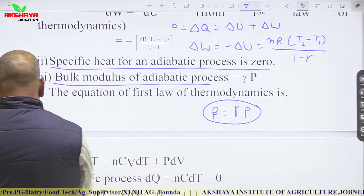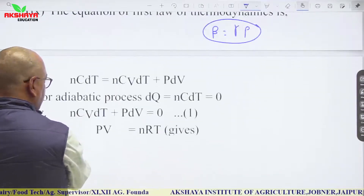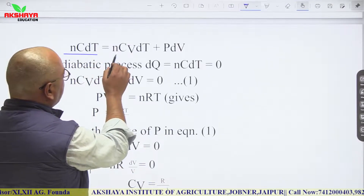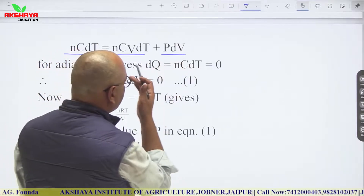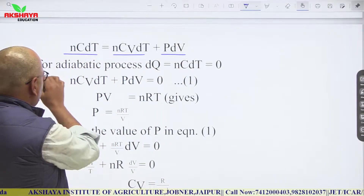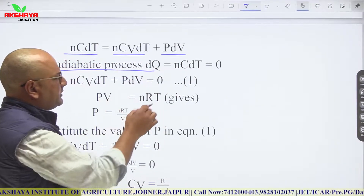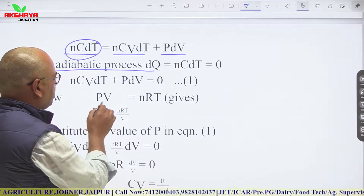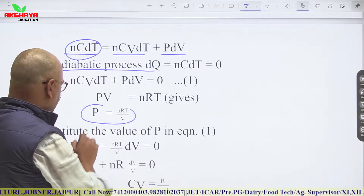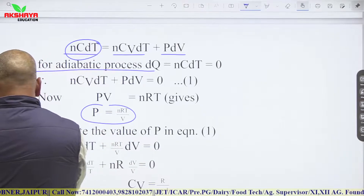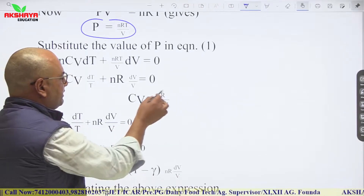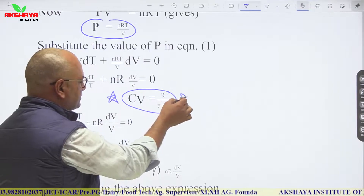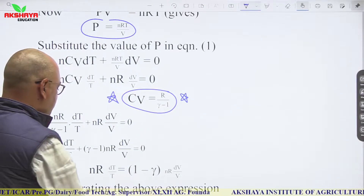From the first law, nC·dT = nCv·dT + P·dV. For an adiabatic process ΔQ = 0, and using P = nRT/V, we can derive that Cv = R/(γ − 1). This is an important relation.